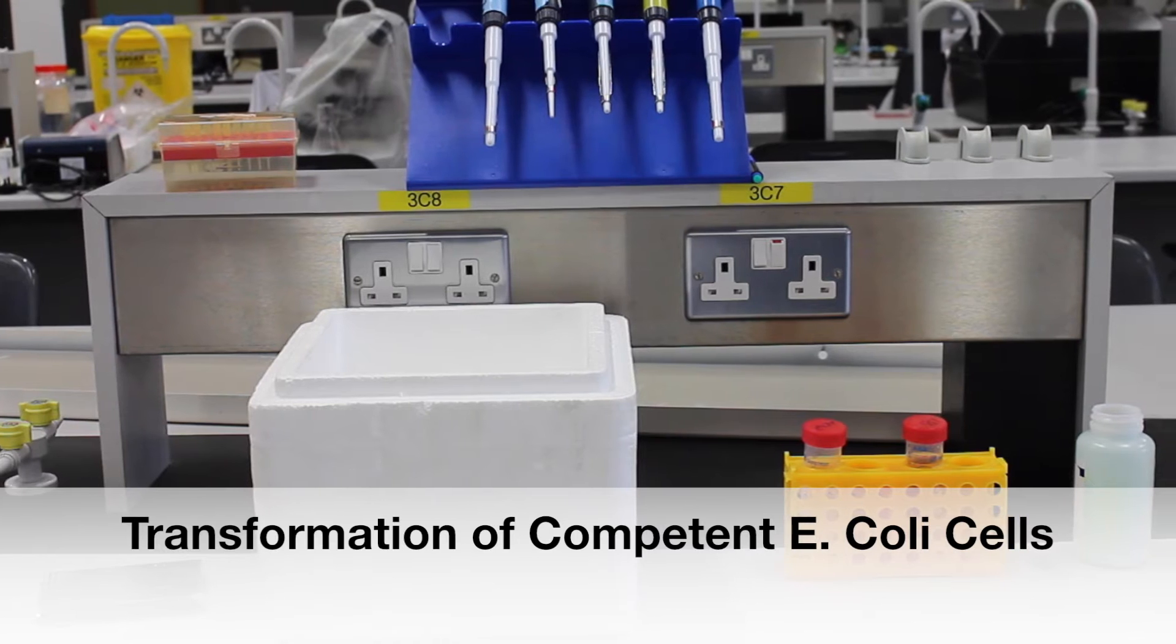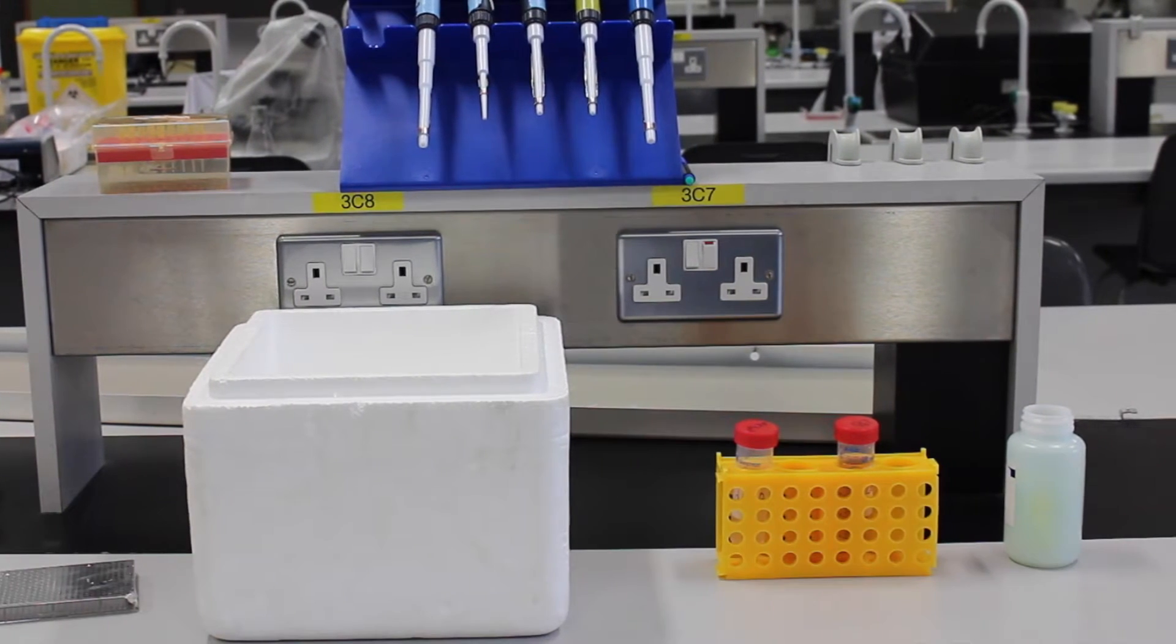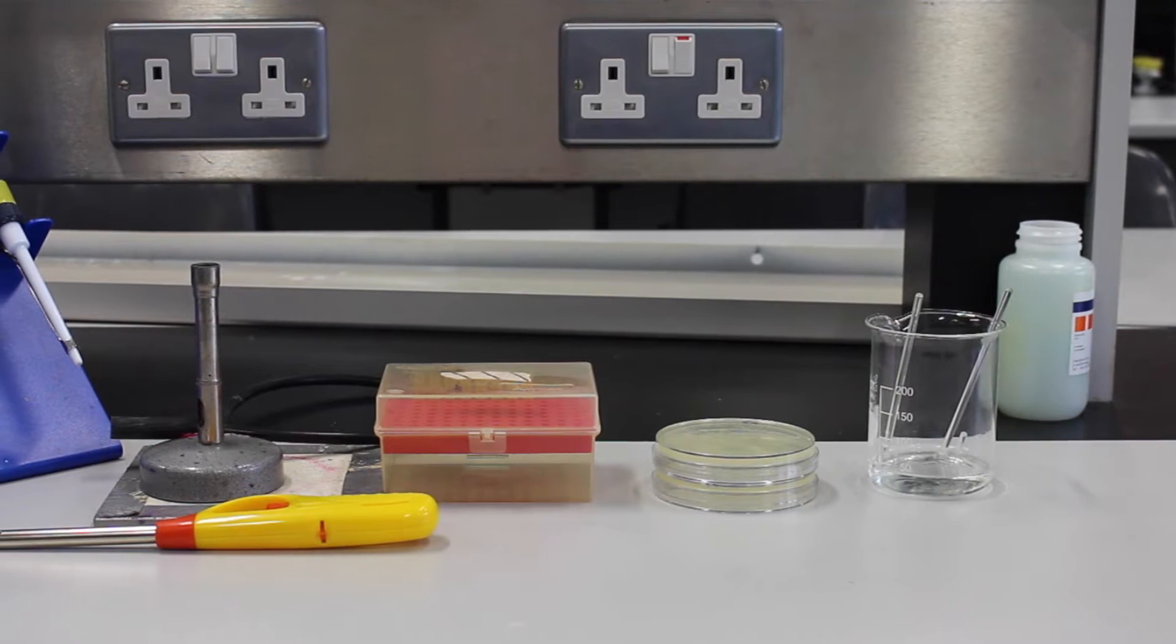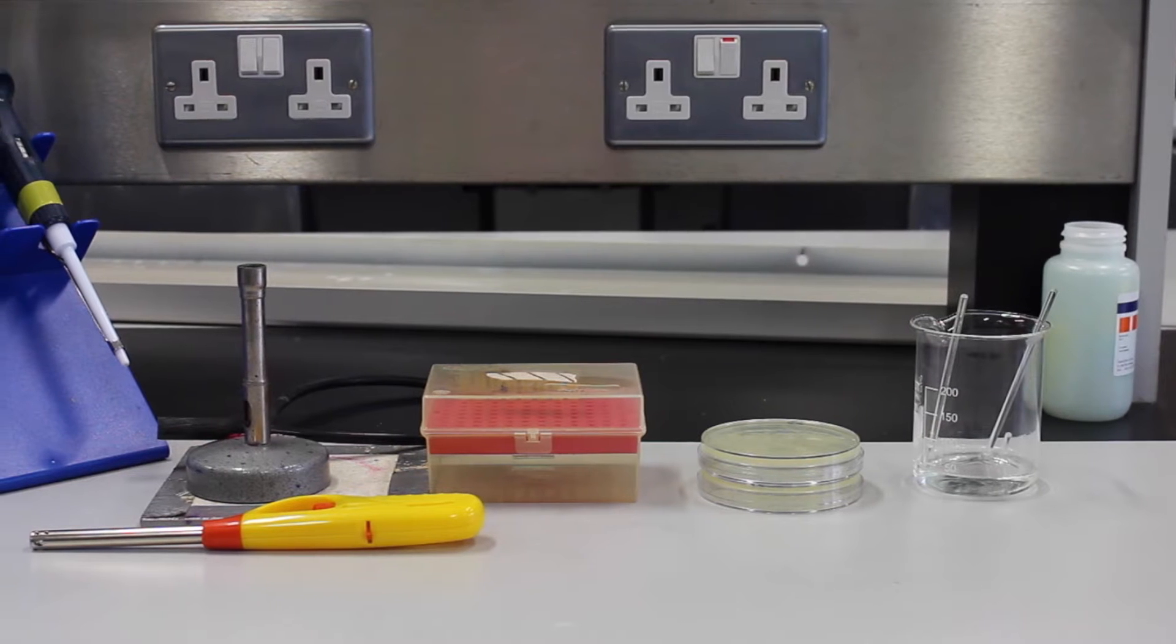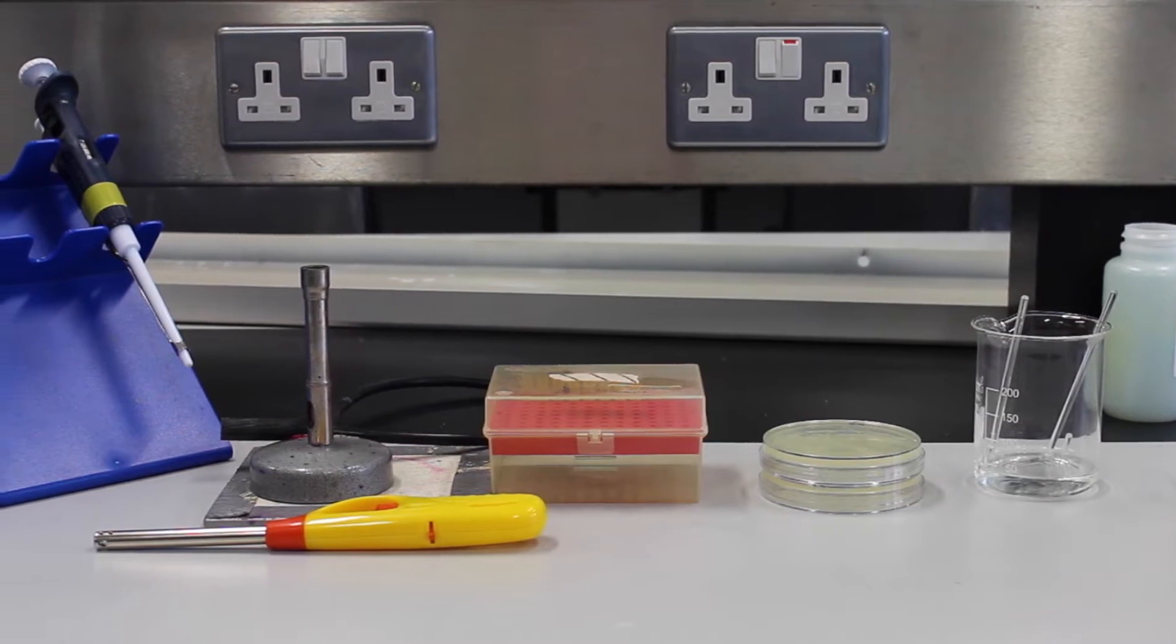This tutorial explains how to carry out a transformation of competent E. coli cells. Competent E. coli cells are more susceptible to taking up plasmid DNA. The process by which E. coli or any other cells take up plasmid DNA is called transformation.